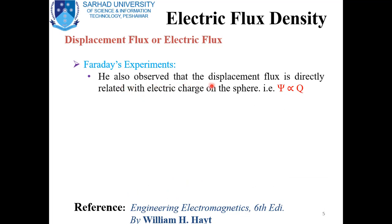He also observed that the displacement flux is directly related to the electric charge. We can write Ψ, known as the displacement flux, and this is directly related to the charge on the inner surface, which has the same magnitude as the charge induced on the outer surface. In SI units, this proportionality can be replaced by a constant, and fortunately in SI units this constant is equal to 1. So Ψ = Q, and the SI unit of displacement flux is the coulomb.